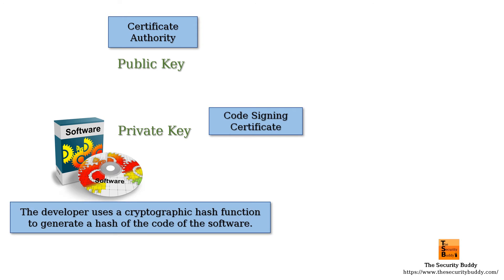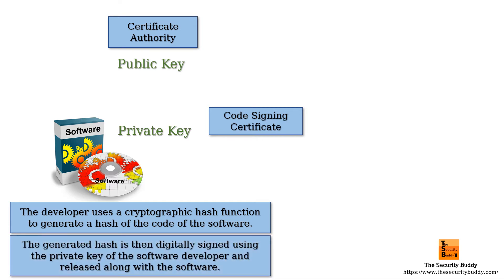The developer then uses a cryptographic hash function to generate a hash of the code of the software. The generated hash is then digitally signed using the private key of the software developer and released along with the software.